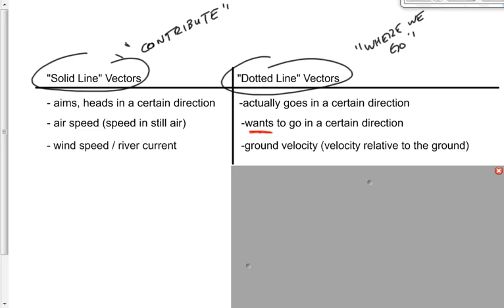If you can't remember whether the wind speed is solid or dotted, just think it through. Does the wind contribute to where I go, or is the wind direction where I go? If the wind is going east, does that mean I go east? No — it just contributes to my motion. Therefore, it's a solid line vector.